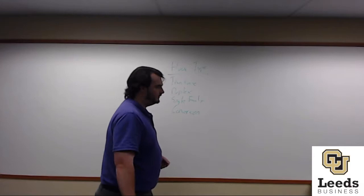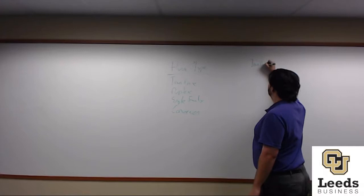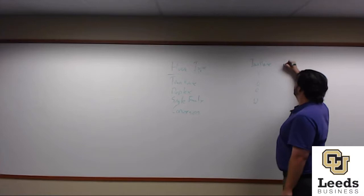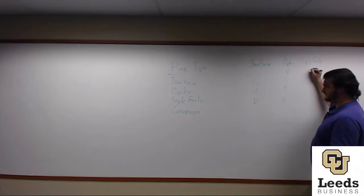In order to dummy code this, I would have townhouse one, zero, zero, zero, duplex zero, one, zero, zero, single family zero, zero, one, zero.